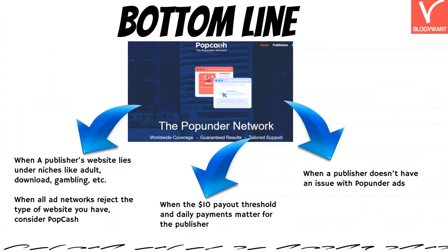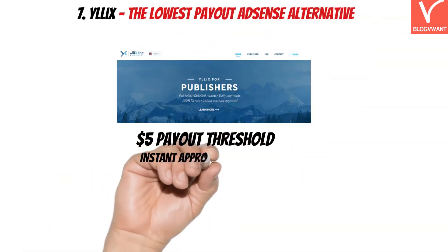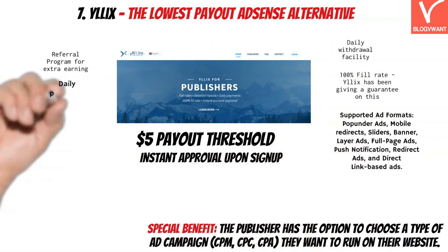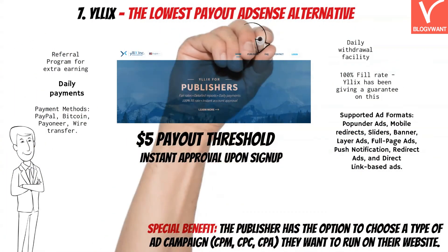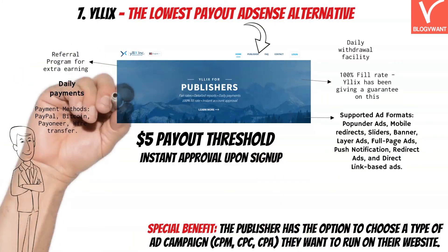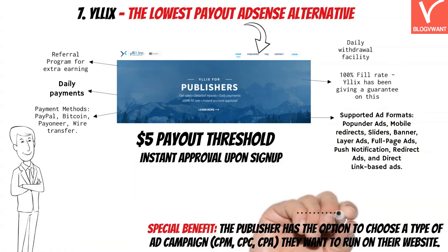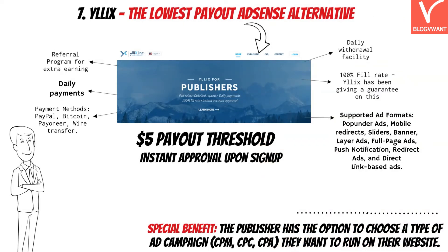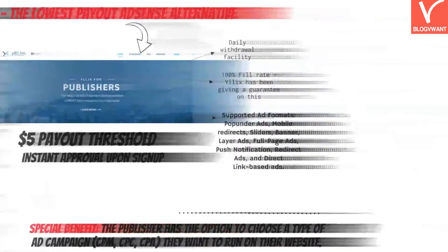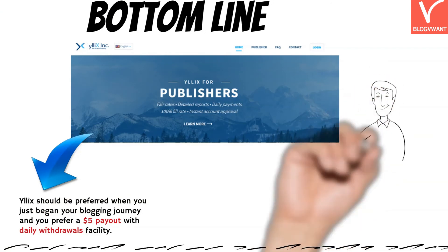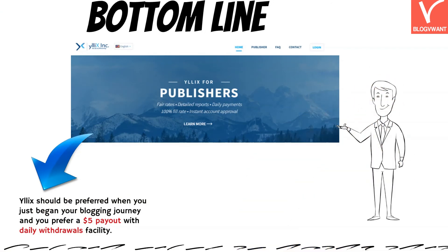So in a nutshell, go for the PopCash AdSense alternative in the following cases. The last AdSense alternative for small websites and low traffic blogs is Elix. The two highlighted plus points of Elix over AdSense are the $5 payout threshold and instant approval to the publisher program. There is one more specialty of Elix — the publisher has the option to choose the type of ad campaign they want to run on their website. Elix should be preferred when you just began your blogging journey and you prefer a $5 payout with daily withdrawals facility.